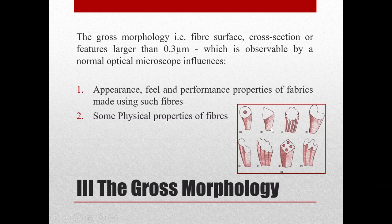Some physical properties of fibers also change because of cross-sectional shape changes or features added on the surface of the fiber. For example, a hollow fiber, a triangular cross-section fiber, a kidney bean shaped fiber, or a square shaped fiber with hollows inside — all these various shapes will affect certain physical properties.